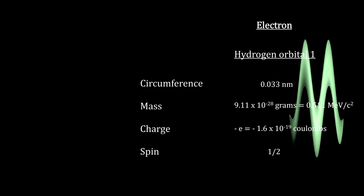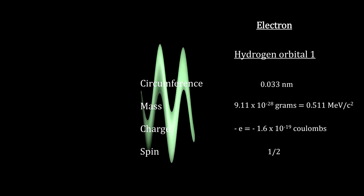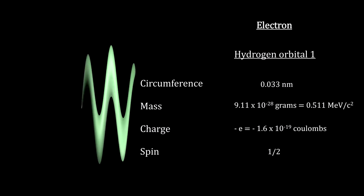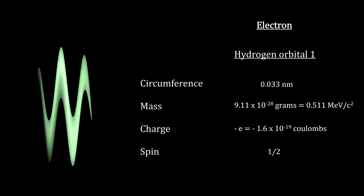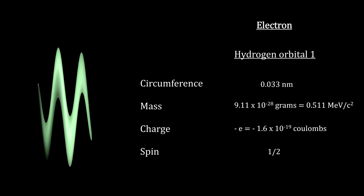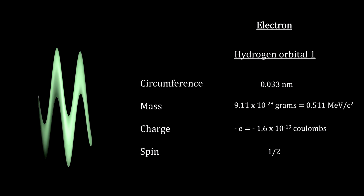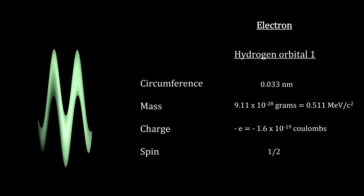For electrons, it's hard to talk about their size because their wave packets are different for varying circumstances, from standing waves in thin shells to scattered waves in electron microscopes. What we did in this segment was to calculate its length around the hydrogen nucleus at 0.033 nanometers.